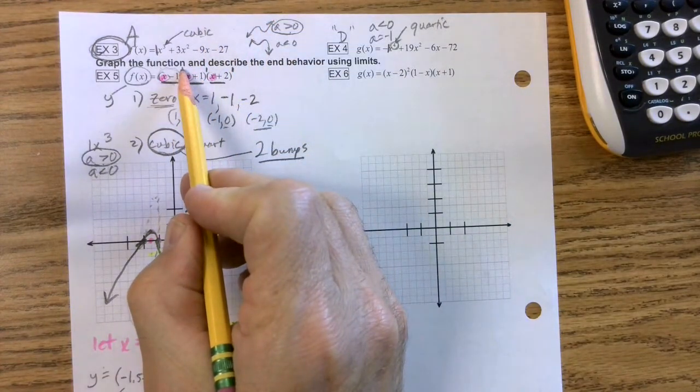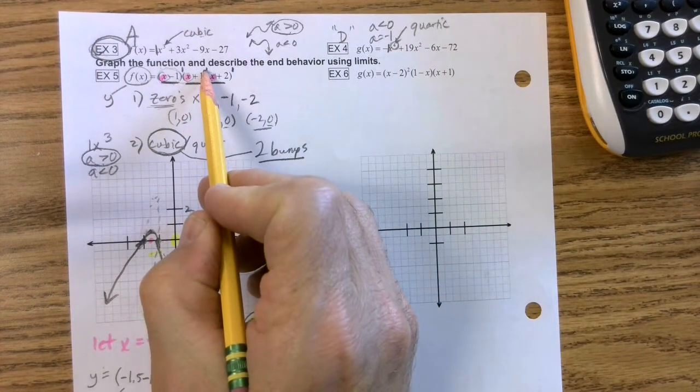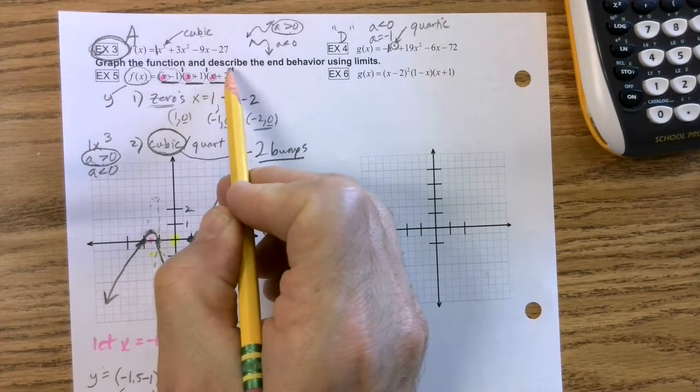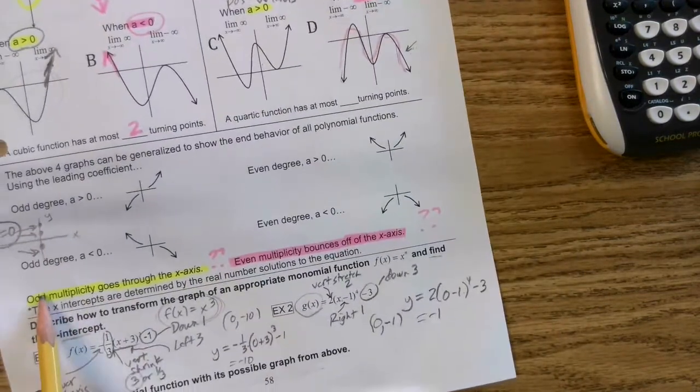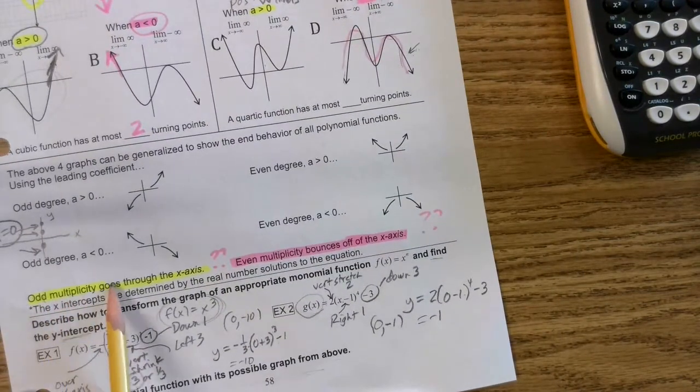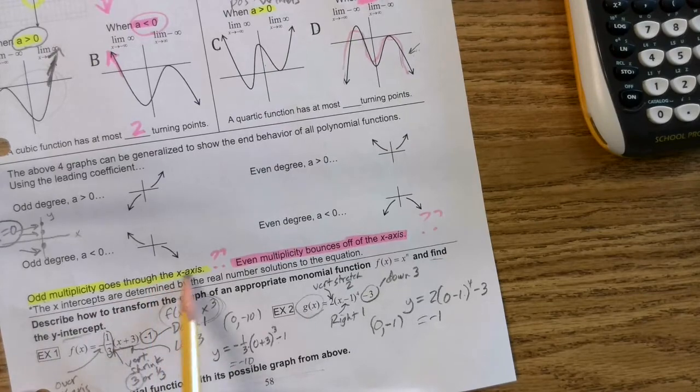Is that an odd number or an even? Odd. Odd number or an even? Odd. Odd number or an even? Odd. What did I highlight over here? Odd multiplicity goes through the x-axis.